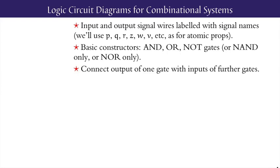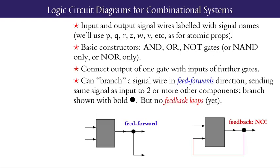The basic gates are connected together using signal wires. The output of one gate can be connected by wire to the input of another gate. A signal wire can be split or branched in a forwards direction to allow the same signal to be fed forward to two or more other gates, with the branching indicated by a bold dot. But in the construction of combinational digital systems, we do not yet allow feedback loops.